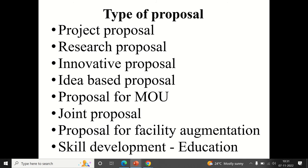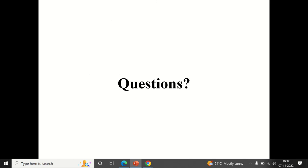Joint proposals are possible — if you have industry contacts with requirements matching your interests, you can jointly submit a proposal. There are also proposals for faculty development, skill development, and education. AICTE wants to ensure students get updated skills comparable to other colleges, so you can write a proposal under the education column — for example, to establish language labs or other skill-development infrastructure.